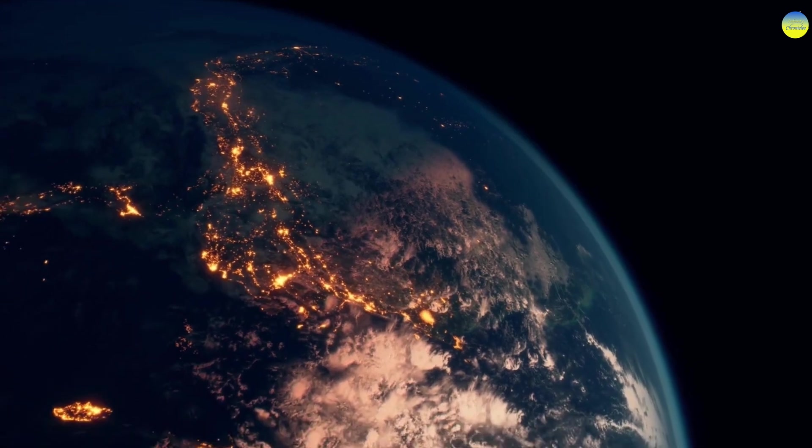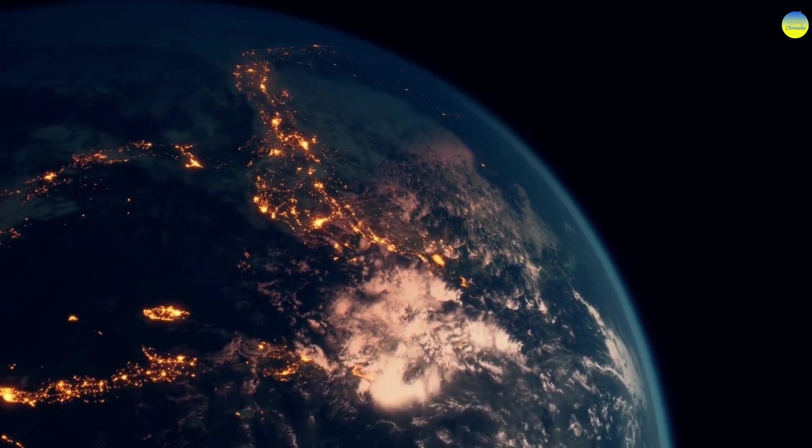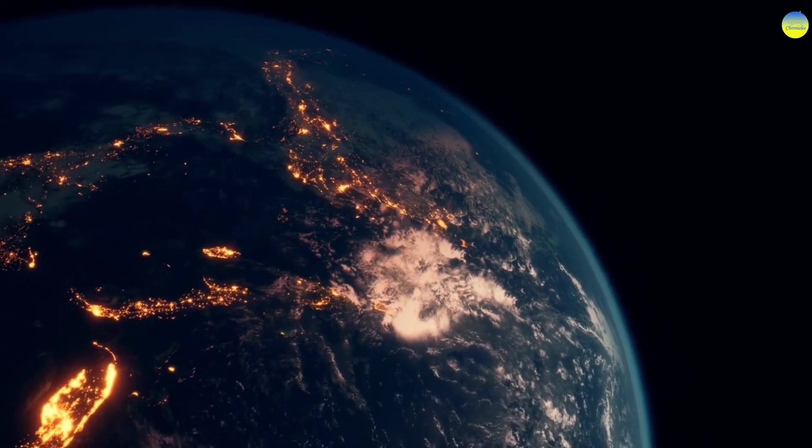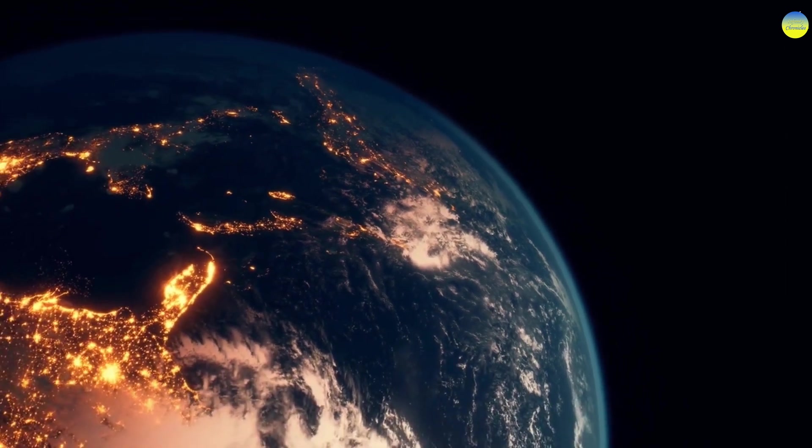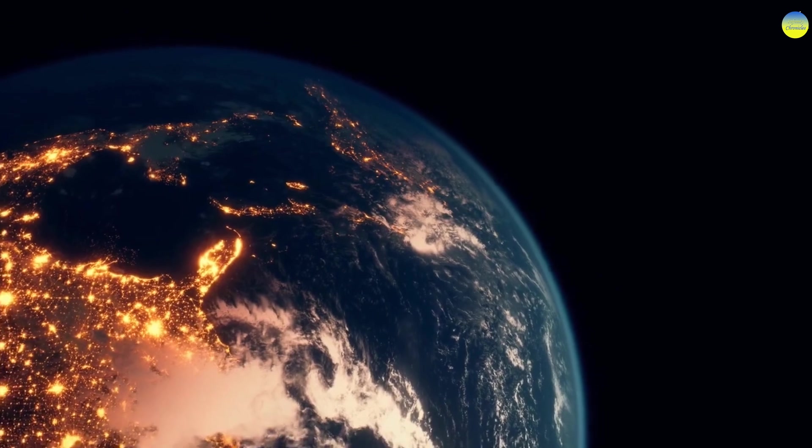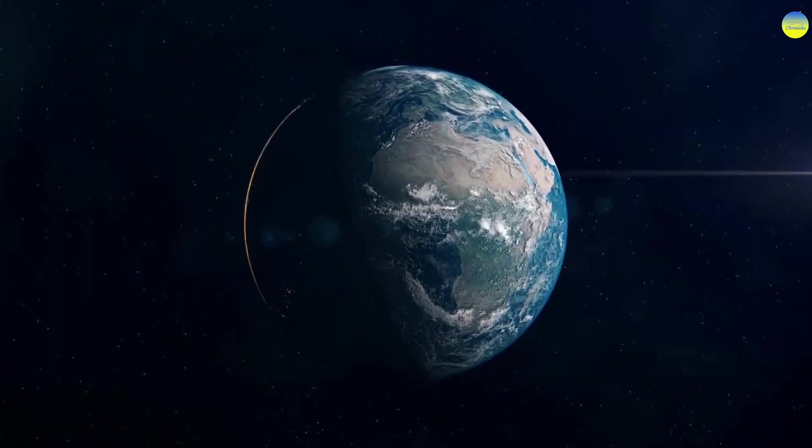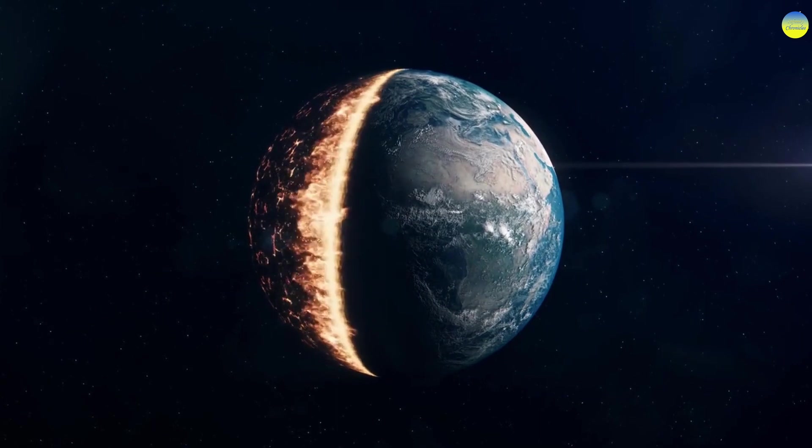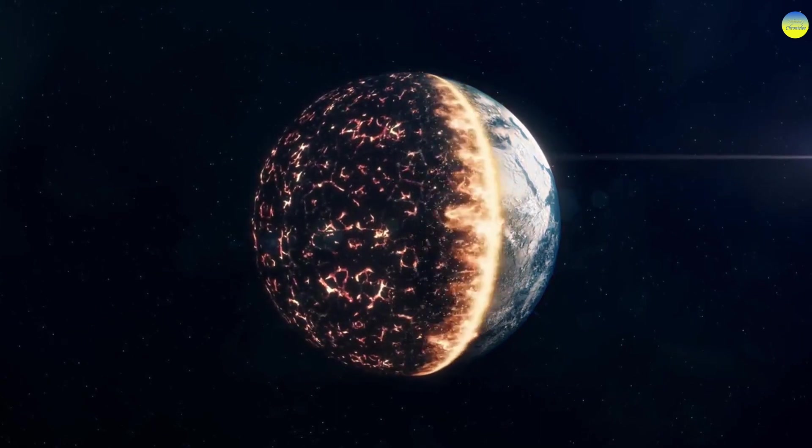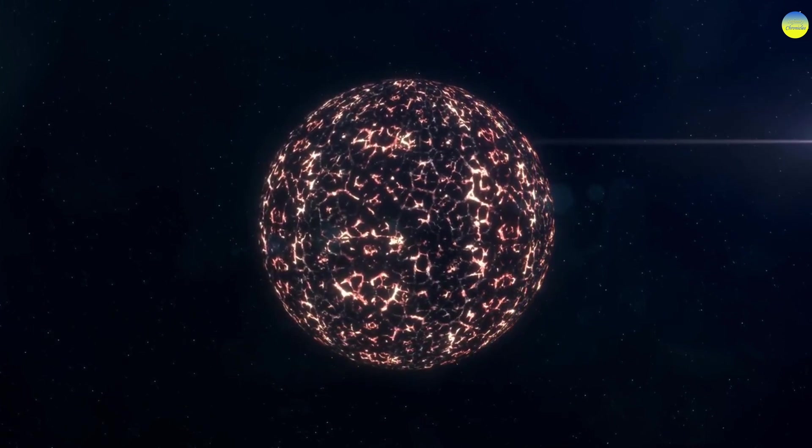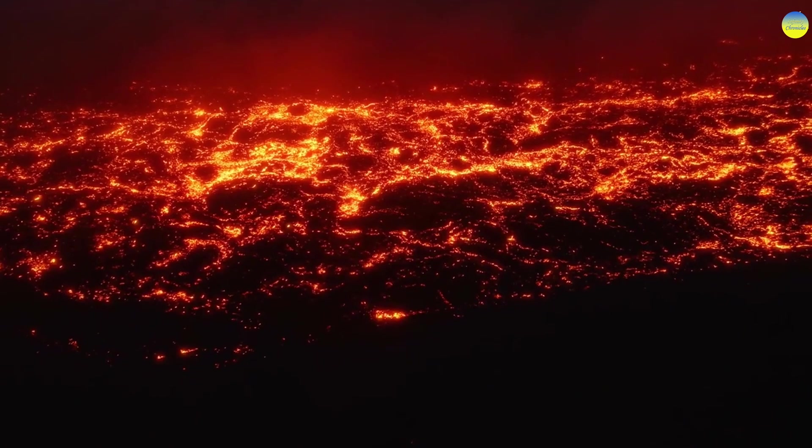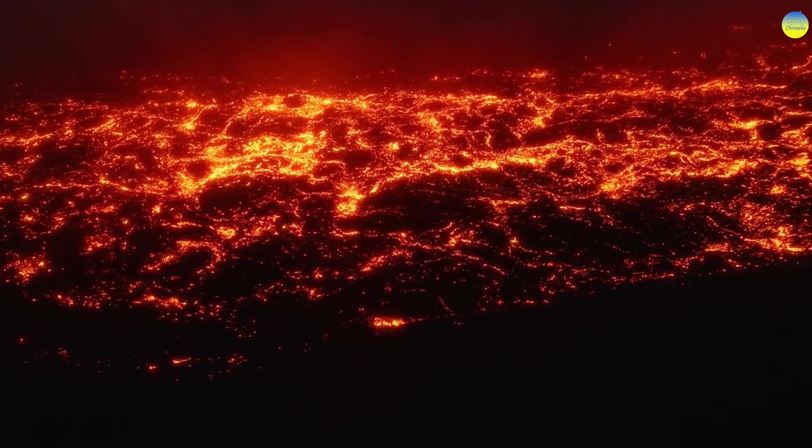If the Earth had a twin rotating with it around a common center of mass, then humanity most likely did not exist. The enormous tidal forces of such a powerful neighbor led to an increase in seismic and volcanic activity by hundreds or even thousands of times. As a result, the planet's surface was almost completely covered with molten matter, and the oceans would be too hot for life and perhaps even evaporating.